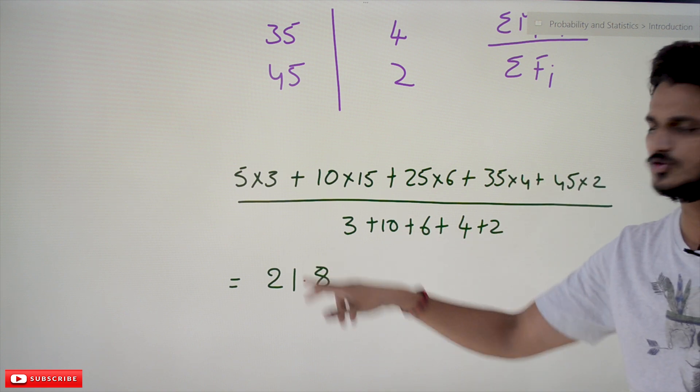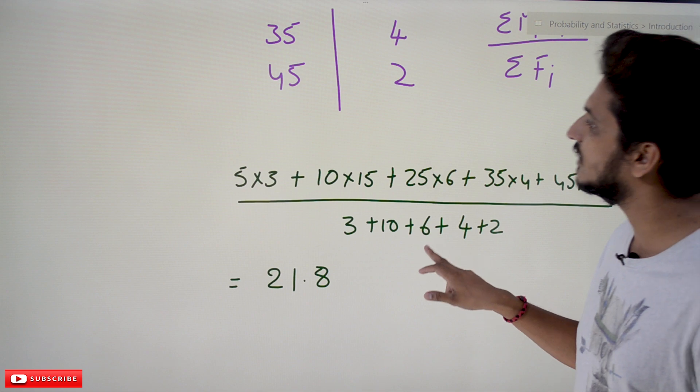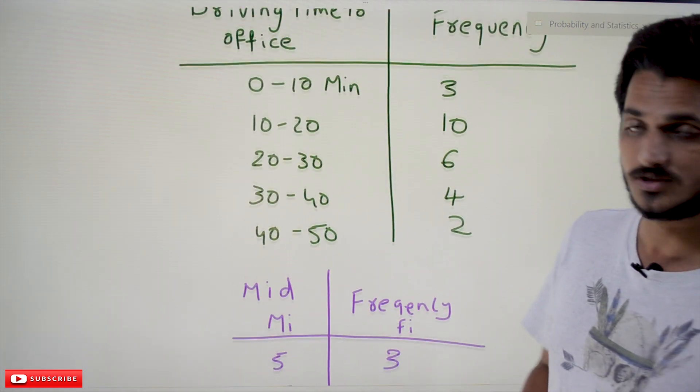This is how we calculate the arithmetic mean given the interval values. Hope you understand the concept. In our next class we are going to discuss the failure situations of arithmetic mean as a central tendency.